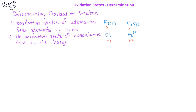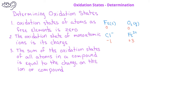The third guideline states that the sum of the oxidation states of all atoms in a compound or ion must be equal to the charge on the compound or ion. For example, since the water molecule is neutral, the sum of the oxidation states of the two hydrogens plus the one oxygen must equal zero. On the other hand, since the carbonate ion has a charge of two minus, the sum of the oxidation states of the one carbon plus the three oxide ions must equal negative two.